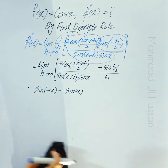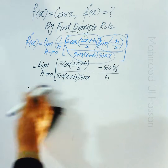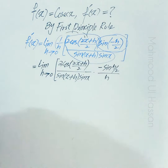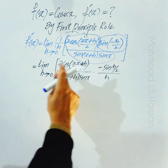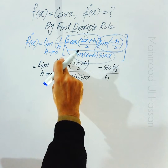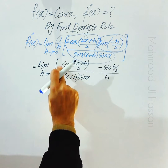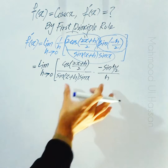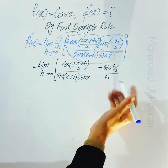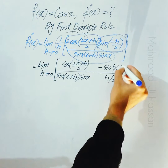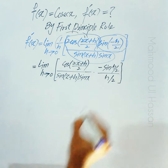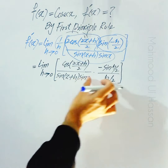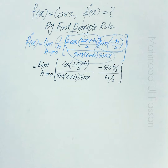Numerator اور denominator دونوں کو 2 پر divide کریں: 2 cancel ہو جائے گا۔ اور h کی جگہ h/2 آ جائے گا۔ یہ دونوں آپس میں product میں ہیں، تو h کے نیچے divide form میں لکھنا same ہے جیسے whole divide by 2 لکھنا۔